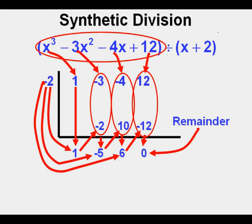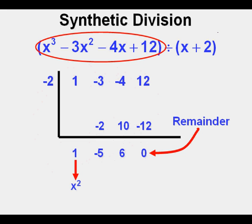Finally, we use these numbers calculated to bring down our answer. The 1 means 1x squared or x squared. The negative 5 here means minus 5x. The 6 comes down to the numbers place as plus 6.